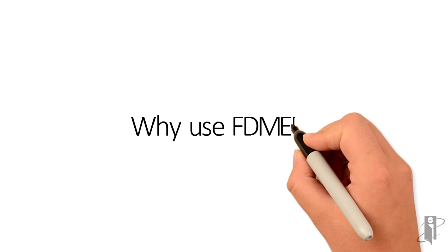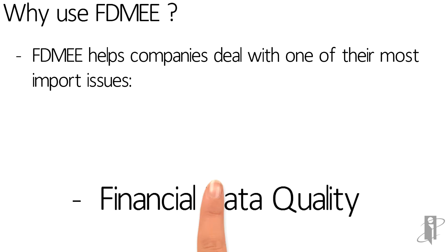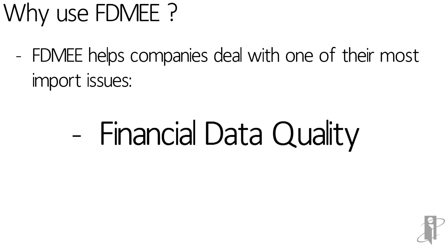Why use FDMEE? FDMEE helps companies deal with one of their most important issues: financial data quality. It helps companies deal with disparate source systems and the inconsistent account structures that can come from them. It helps with weak controls and errors in financial data and metadata collection, financial restatements, lack of visibility, and transparent processes. FDMEE also helps synchronize data between EPM and ERP systems.